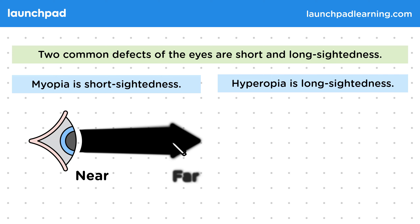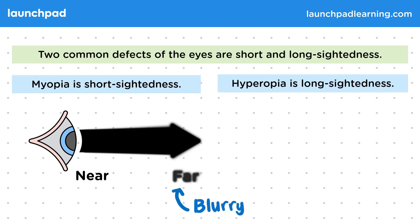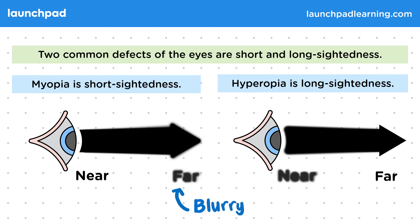In myopia, objects nearer to the eye are more in focus than those further away, which appear blurry. And in hyperopia, the opposite is true, so images nearer to the eye appear blurry compared to those further away.